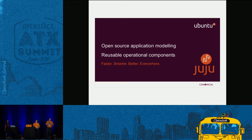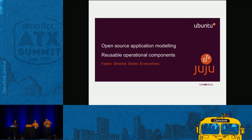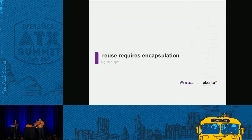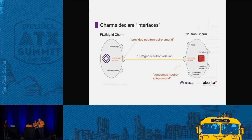We're also using Juju. I'm going to give you the quick overview of Juju and why we're using it to give you the context of why we're doing that with PlumGrid. It's about application modeling and reusable operational components. What that gives us is economies of scale. When we want scalability and reuse, it requires encapsulation. We're going to skip straight through to what we're talking about when we talk about encapsulation.